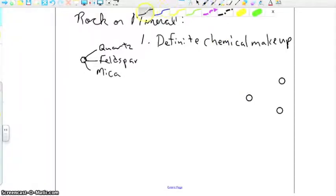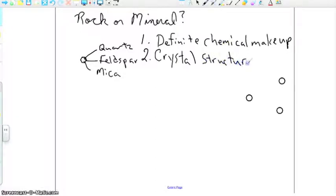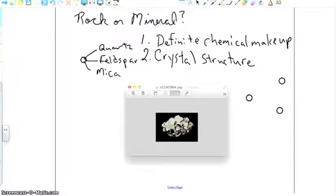Another difference between rocks and minerals is going to be that minerals have a definite crystal structure. You know what a crystal structure looks like. It's kind of shiny. It has smooth, flat surfaces. And I have a picture here of a mineral that has a crystal structure.